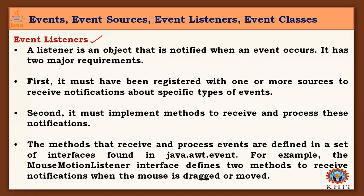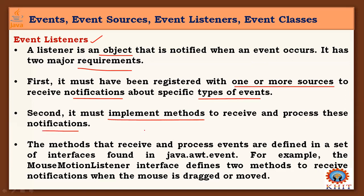Event listeners: a listener is an object that is notified when an event occurs. There are two major requirements. First, it must have been registered with one or more sources — only then can it handle events generated in our programs and receive notifications about specific types of events. Second, it must implement methods to receive and process those notifications. The listener must implement the listener interface and implement the methods given by that interface to handle or process events received from the source.